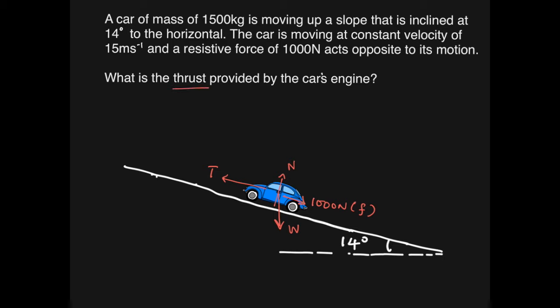Now what we are interested in is the thrust. There are some key things to note: the car is moving at a constant velocity of 15 meters per second. That tells you that the acceleration is zero. The acceleration up the slope is zero.